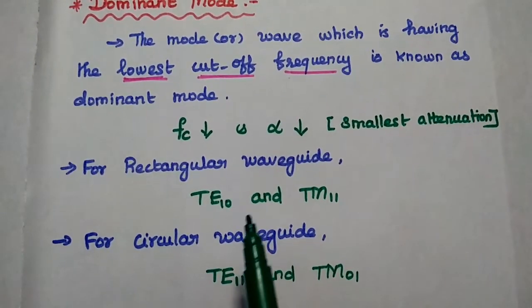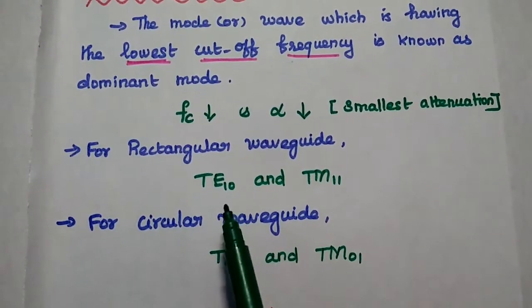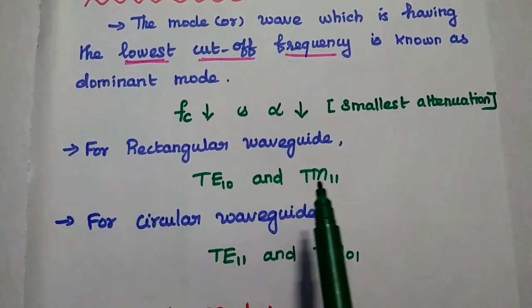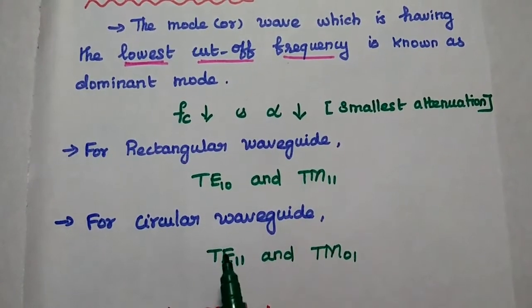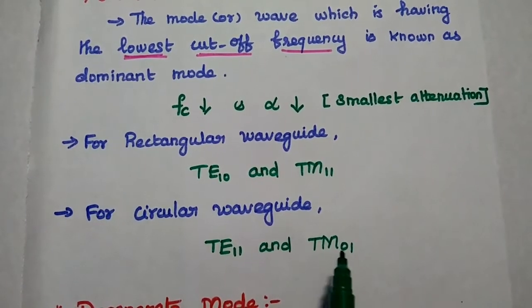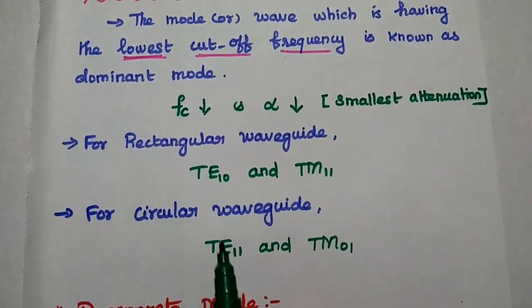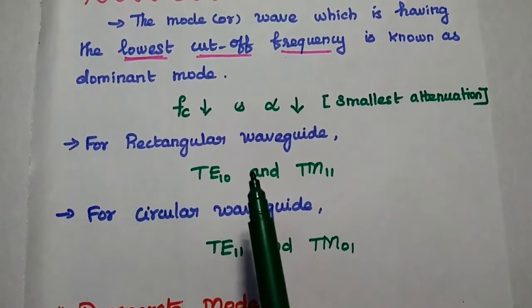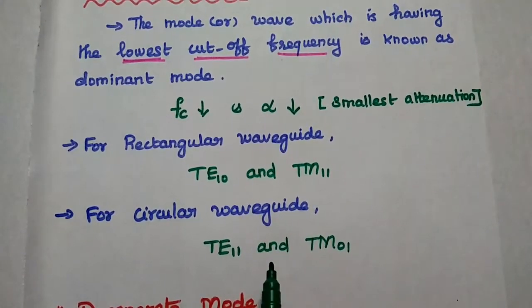For rectangular waveguide, the dominant modes are TE10 and TM11. For circular waveguide, TE11 and TM01. So these are the dominant modes for rectangular and circular waveguides.